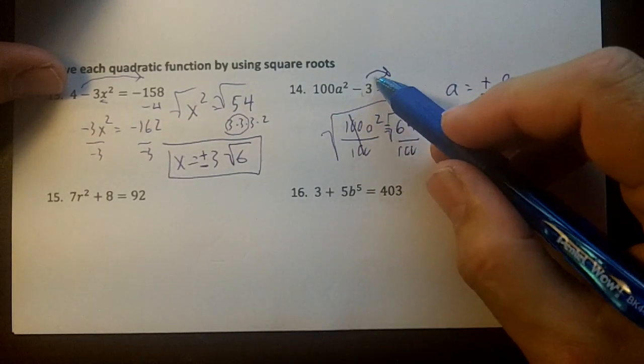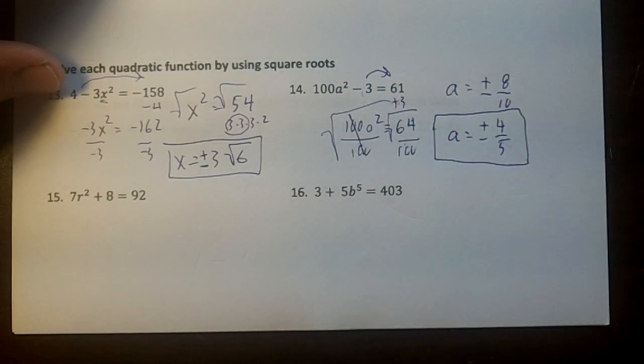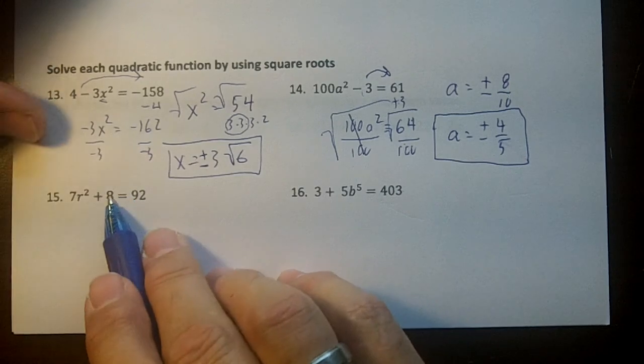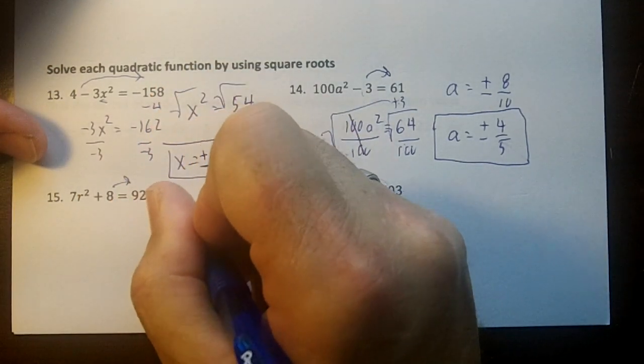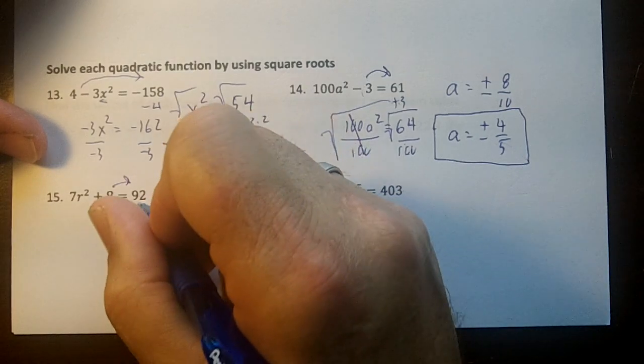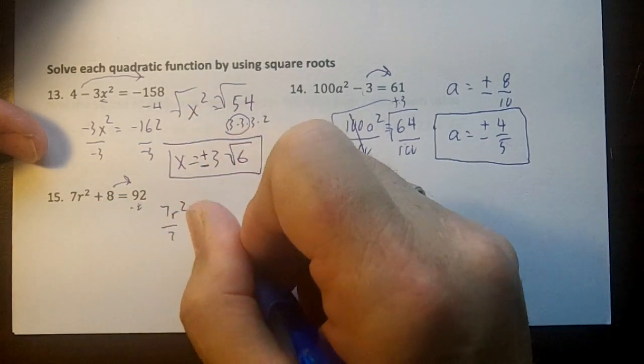So you move this number over, you divide, and then you square root. That's all you're doing. Okay, right here, we're going to move over the 8. We're going to have 7r squared equals, and if you subtract 8, you get 84. Divide by 7.